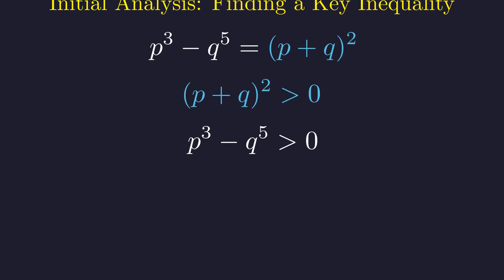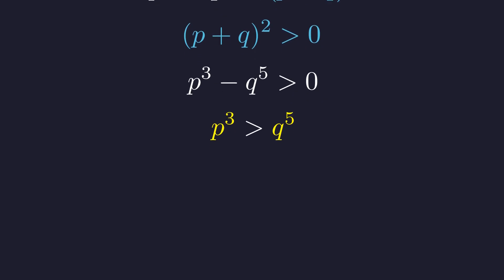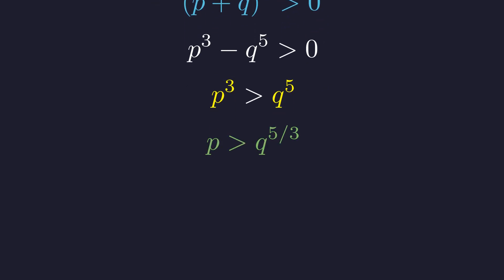Therefore, the left side of the equation must also be strictly positive. Rearranging this inequality gives a direct comparison between p cubed and q to the fifth. To get a direct comparison between p and q, we can take the cube root of both sides. This implies that p must be strictly greater than q raised to the power of 5 over 3.